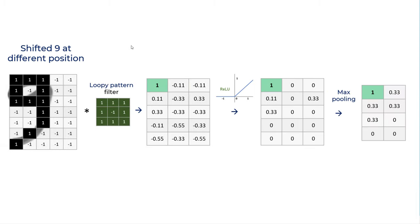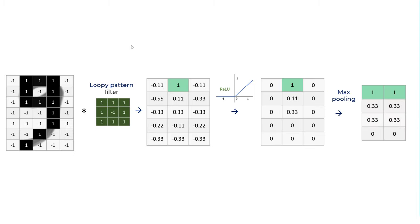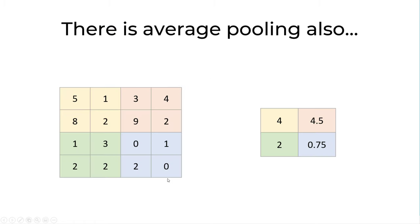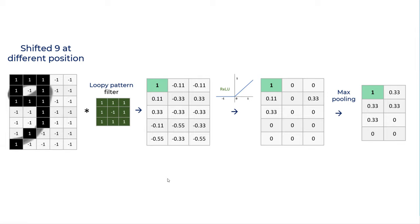When our number is shifted, this is the original number where we got this max pooling map. When number is shifted, you get this pooling map. So still, you are detecting the loopy pattern at the top. So max pooling along with convolution helps you with position invariant feature detection. Doesn't matter where your eyes or ears are in the image. It will detect that feature for you.